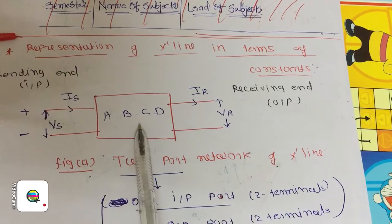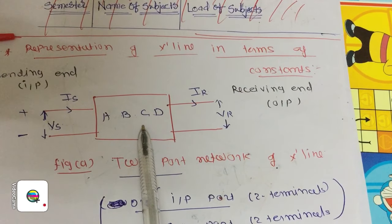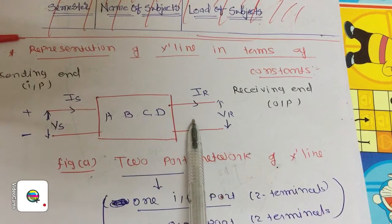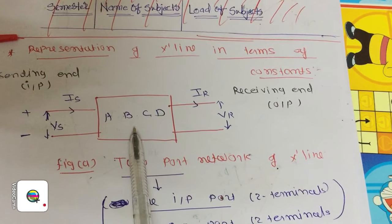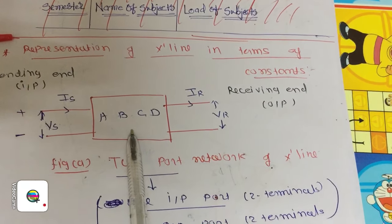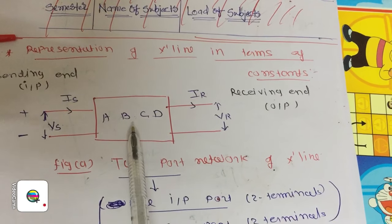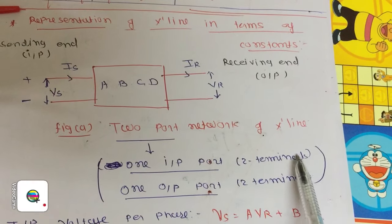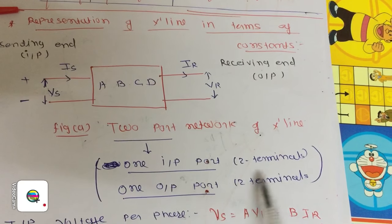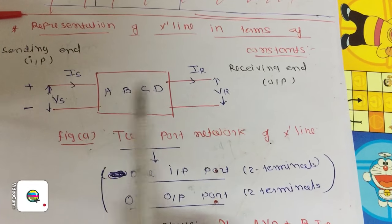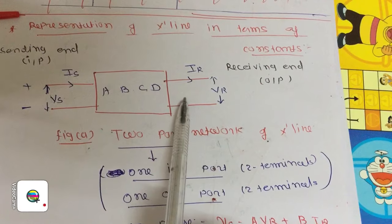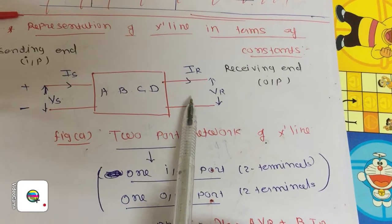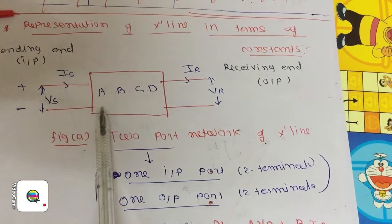We will represent the transmission line using a 2-port network because we are giving input and taking output from it. Each port contains 2 terminals. So this is a 2-port network with 4 terminals — 2 terminals from the input port and 2 terminals from the output port.